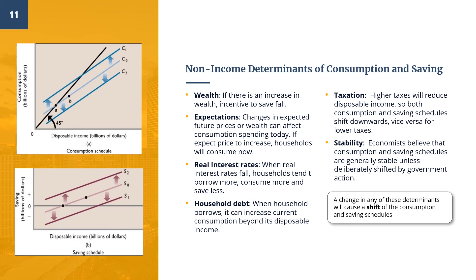Higher taxes reduce disposable income, so both consumption and saving schedules shift downwards; the opposite is true for lower taxes. Finally, economists believe that consumption and saving schedules are generally stable unless deliberately shifted by government actions.